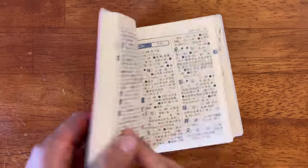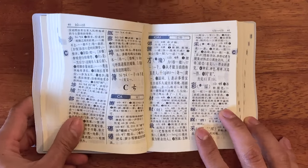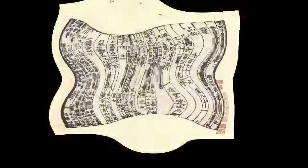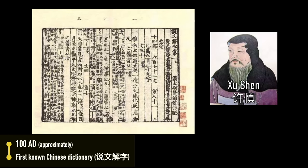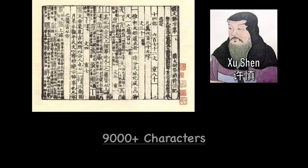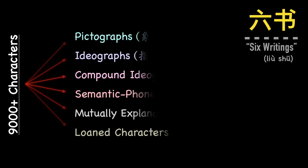This is a Chinese dictionary, and if we go back in time to 100 AD, we would be able to read the very first Chinese dictionary, written by a guy named Xu Shen. This dictionary not only listed the definition of 9,000 characters of the time, it also explained their origins and organized them into six categories known as liu shu, or six writings.